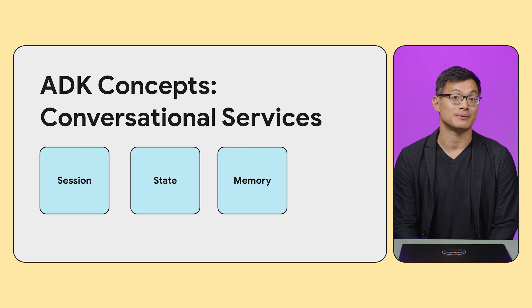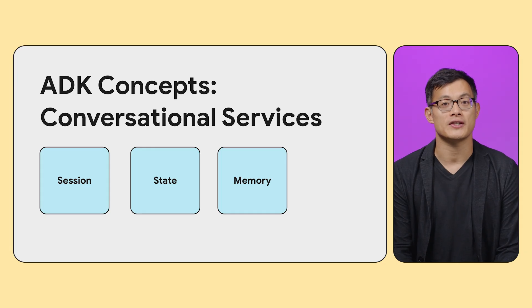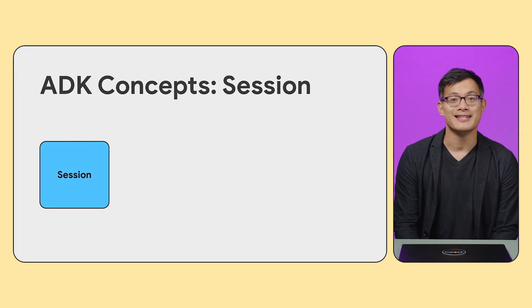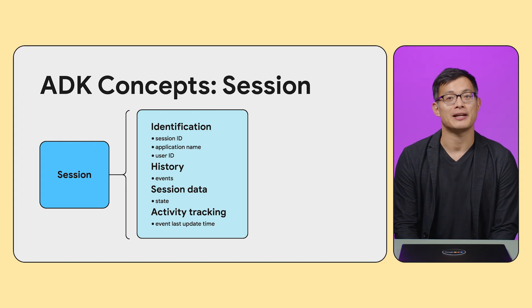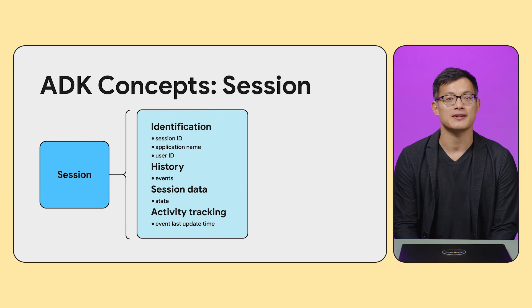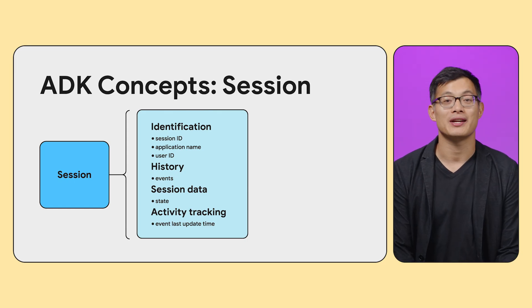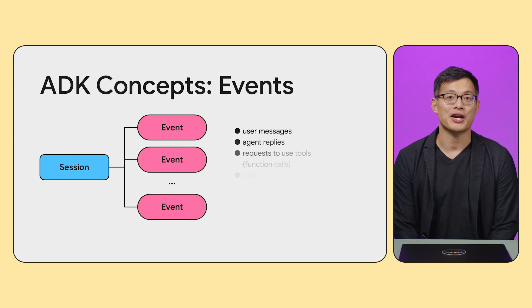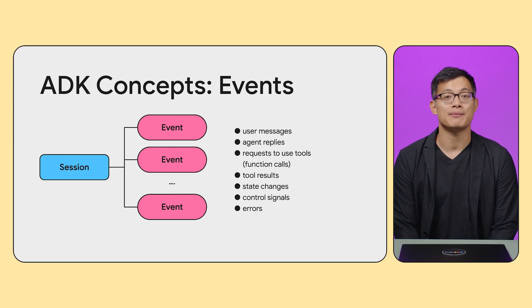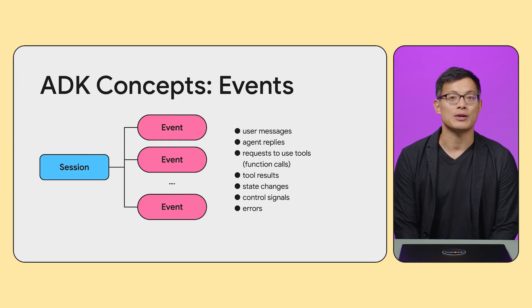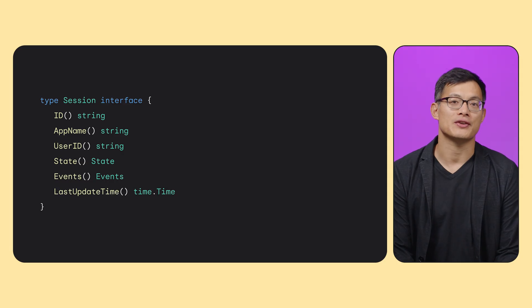A key aspect for handling complex, ongoing interactions is context and knowledge management. ADK provides comprehensive tools for managing this. The core concept here is the session — each session represents a single, ongoing conversation thread with a user. Sessions have key identifiers like a unique ID, an application name, and a user ID, helping you manage multiple conversations for different users and applications. Sessions also store the history, a shared state map, and when the last event happened. The session maintains a history of all interactions — messages, tool calls, results, and more — stored as a sequence of events.